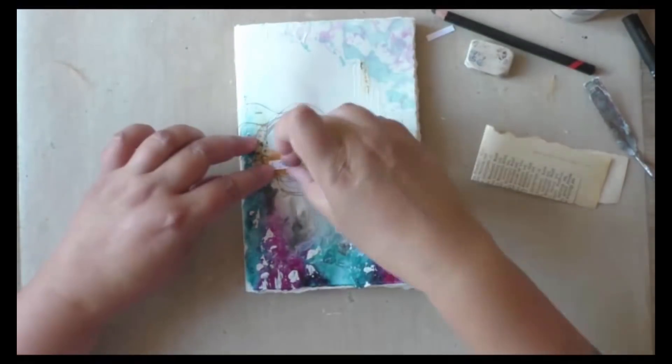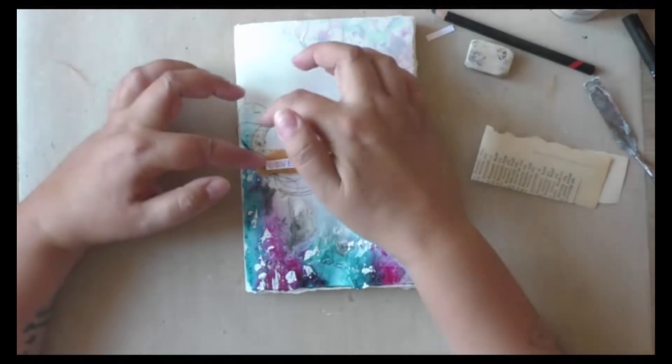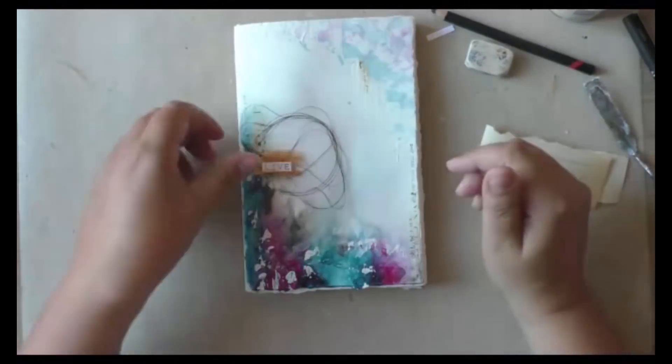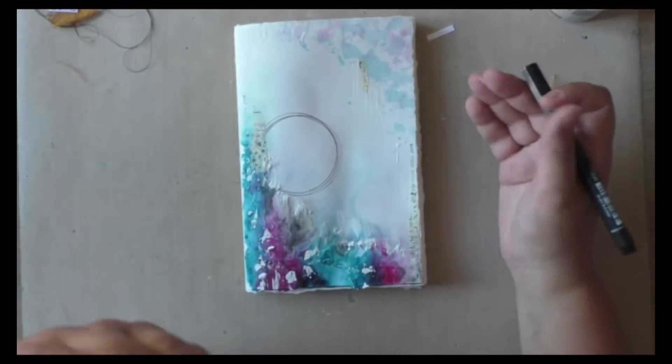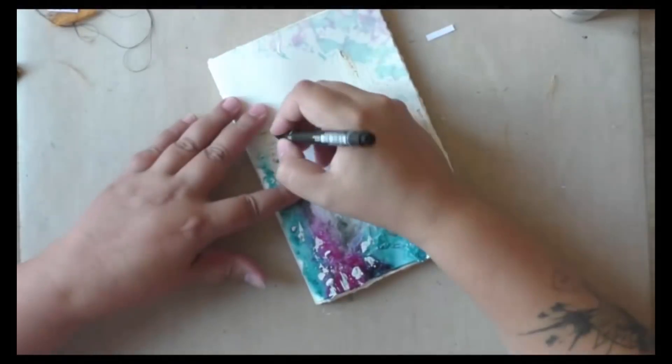This is where I realized that my black thread doesn't make any sense to add, so I'm going to take that away and instead of that I'm going to journal around the circle.